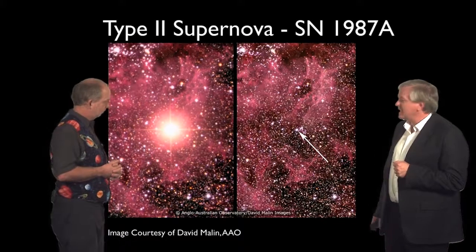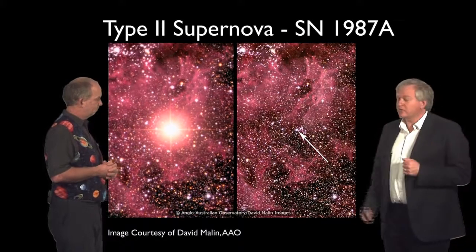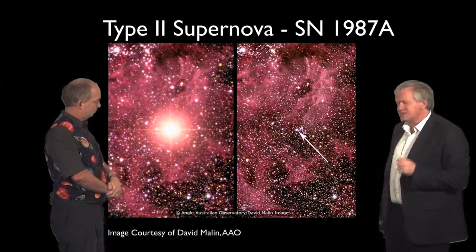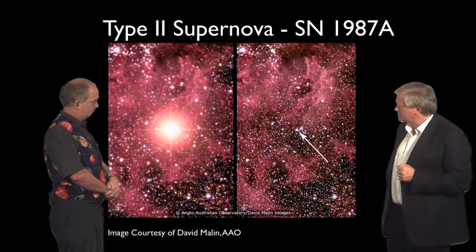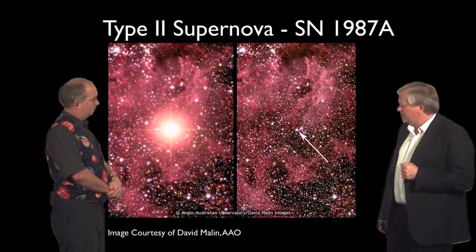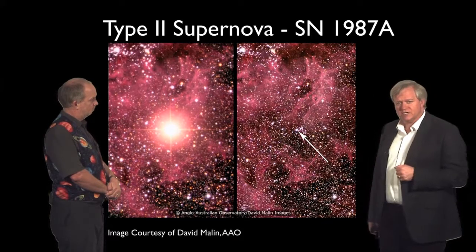And here we see an image of this part of the Large Magellanic Cloud, which is the nearby galaxy which orbits the Milky Way, contains about 10 billion stars. And this is an image taken here in Australia.